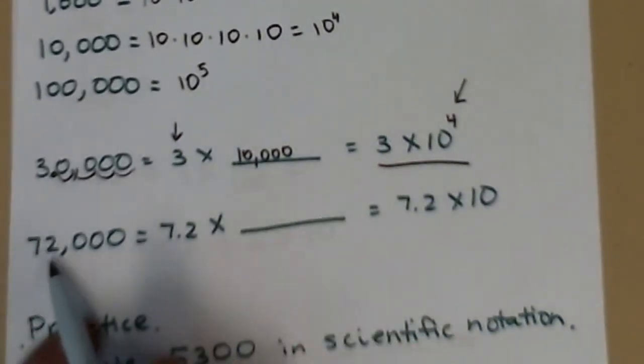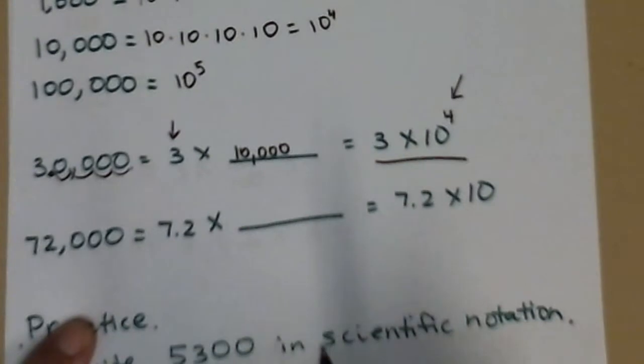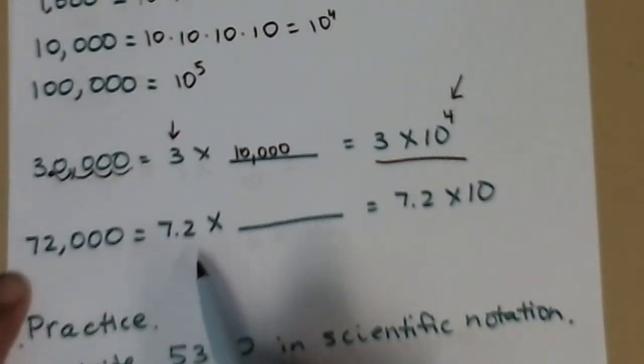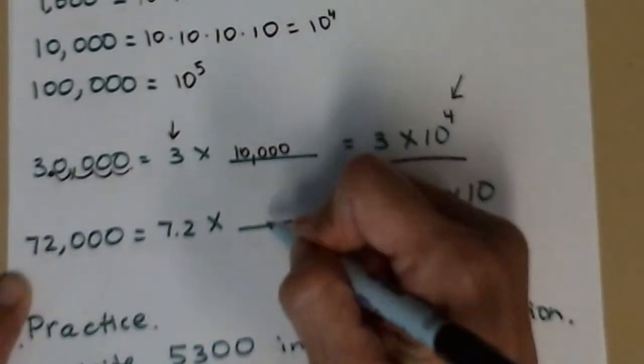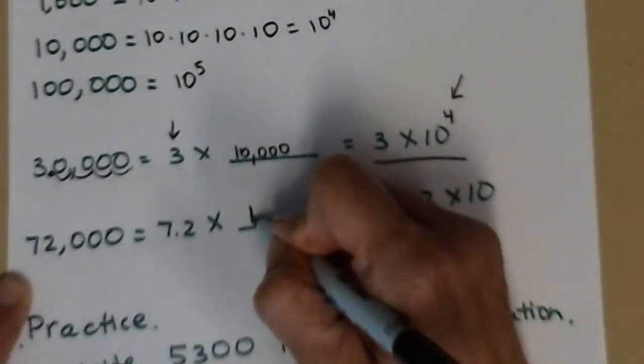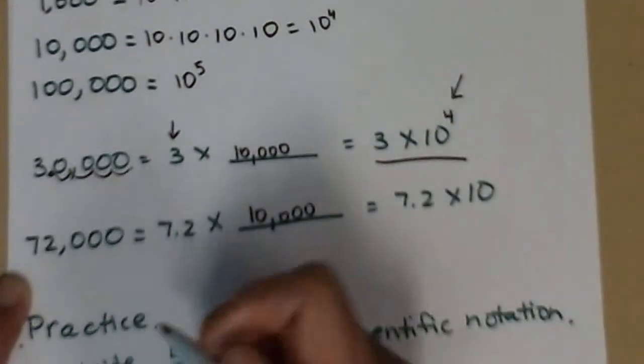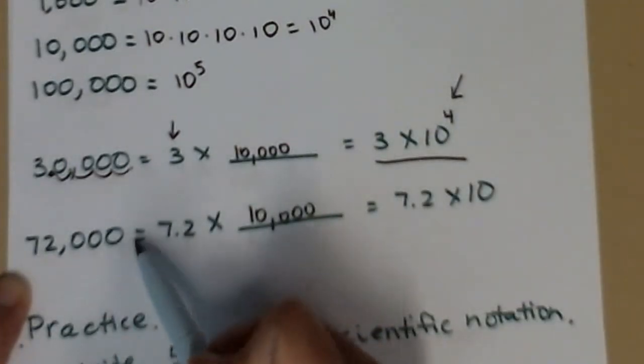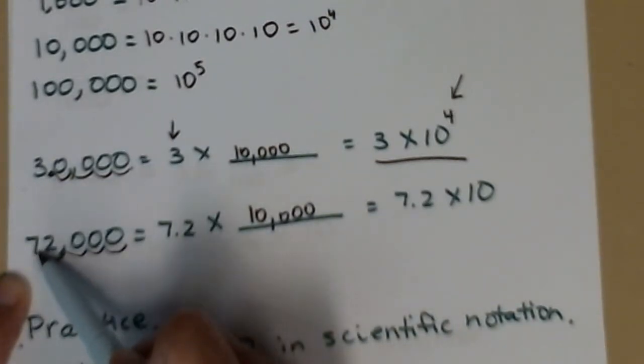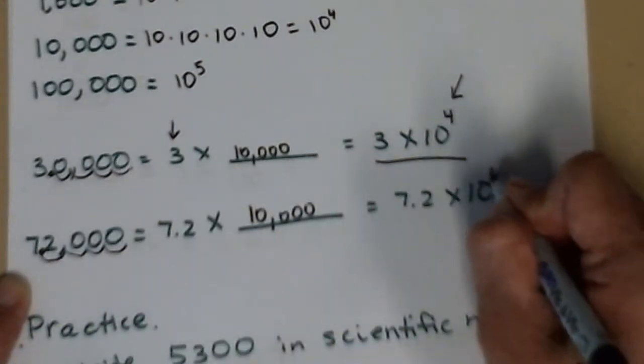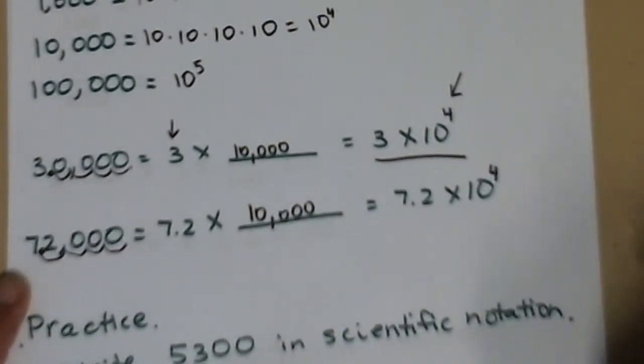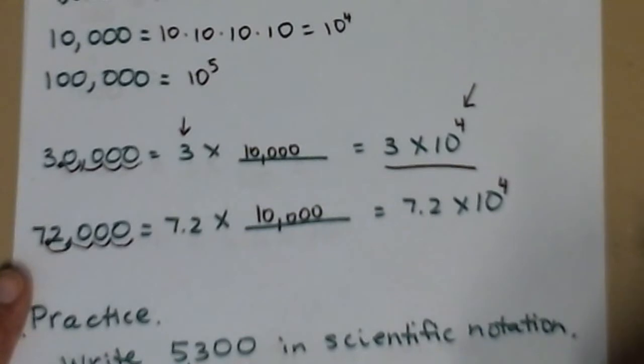So let's look at 72,000. So I'm going to say that's 7.2, let's do the old way, 7.2 times, well that's 10,000 again. I have 7.2 times 10,000. So let's make sure it works with our swoop method: 1, 2, 3, 4 swoops. So that would be 7.2 times 10 to the fourth.